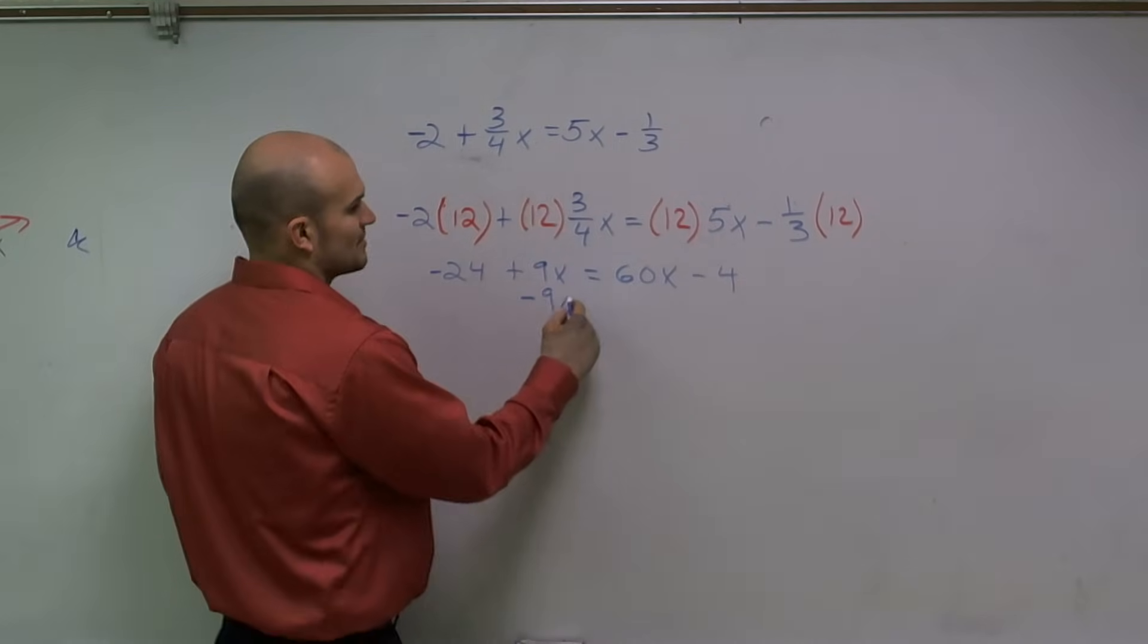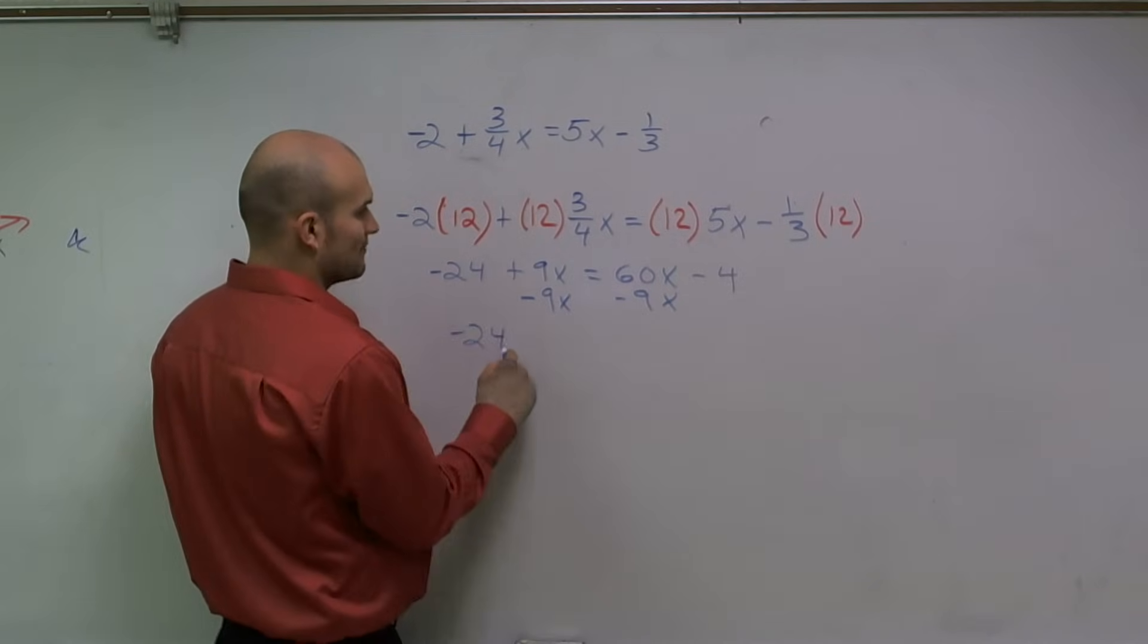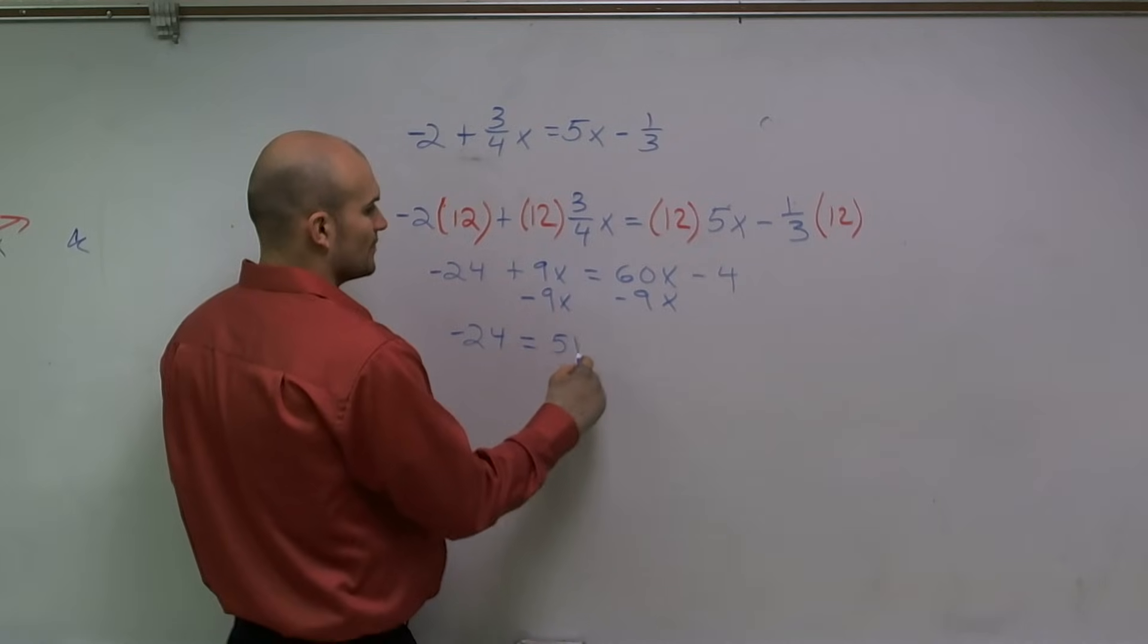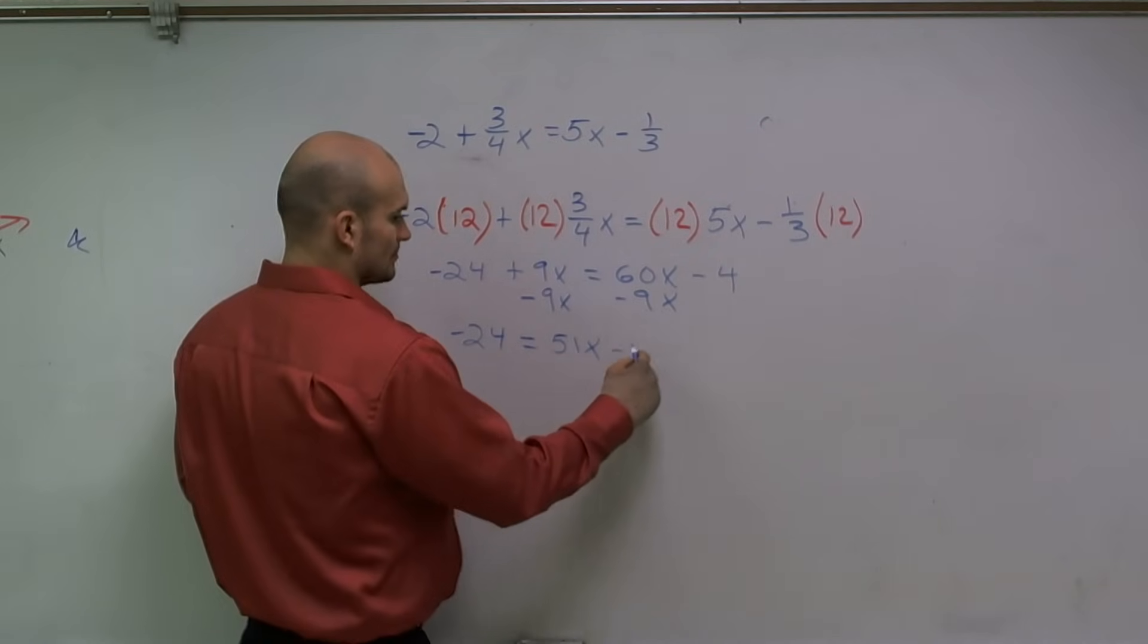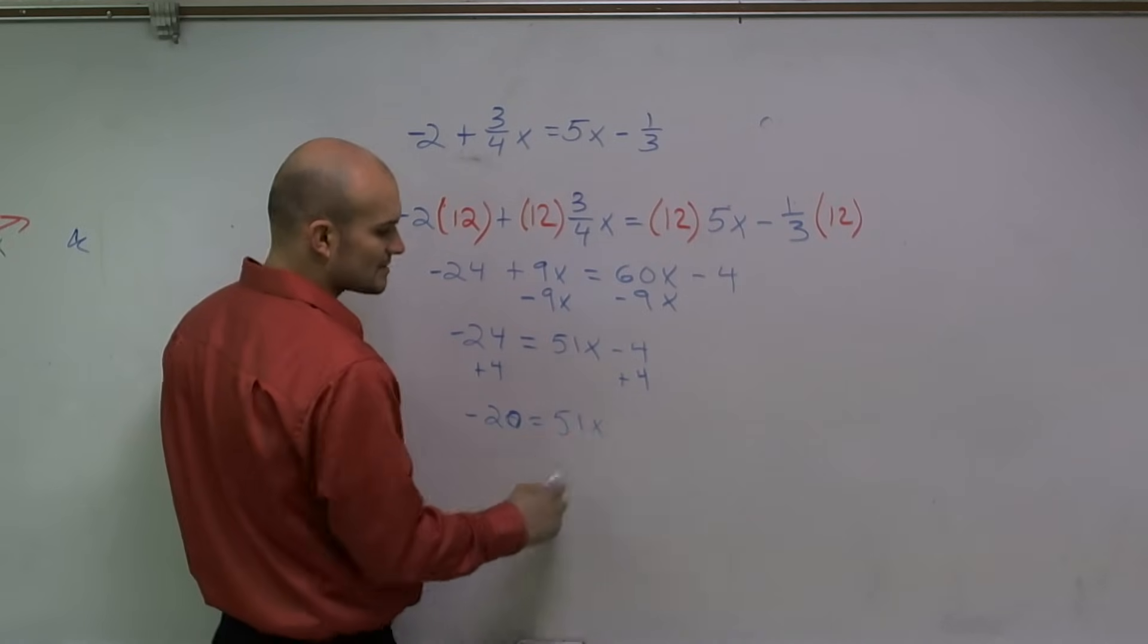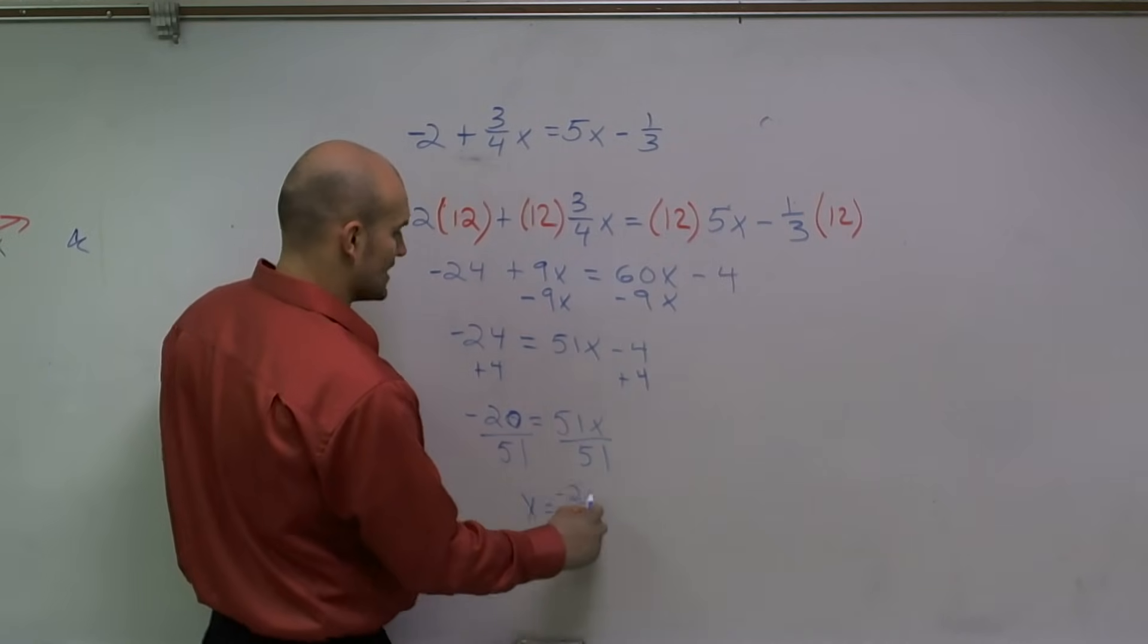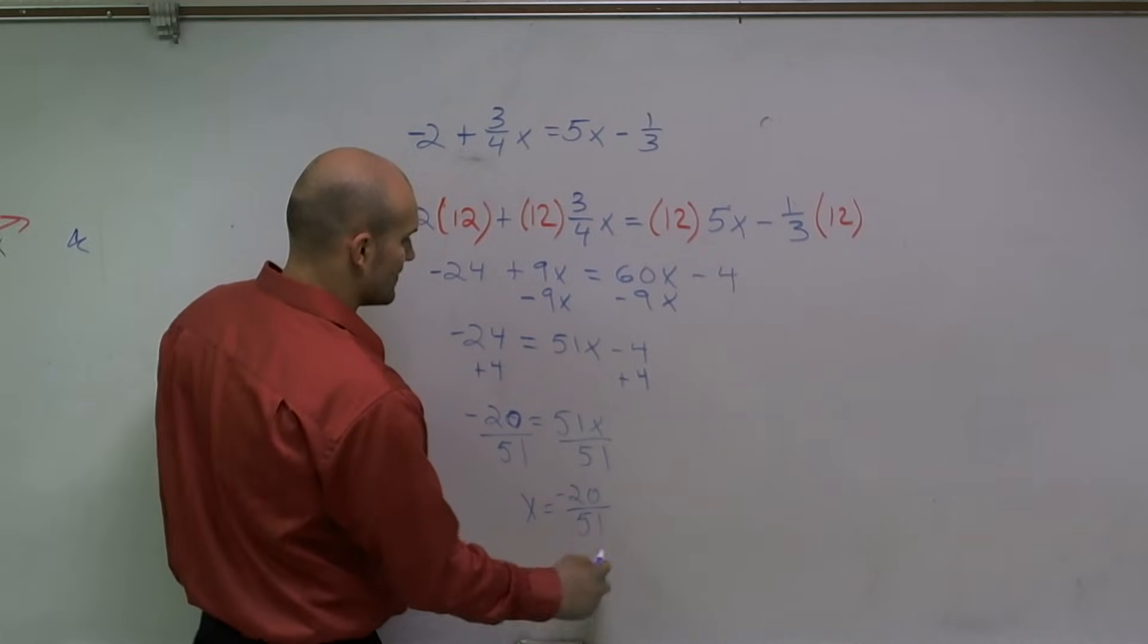To get rid of this 9x, I'm going to subtract 9x on both sides. So I have negative 24 equals 51x minus 4. Then I'll add 4 to the other side. Therefore I get negative 20 equals 51x. Now divide by 51, and therefore I get x equals negative 20 divided by 51.